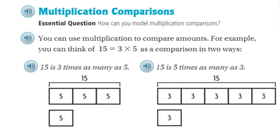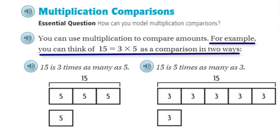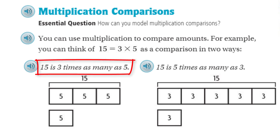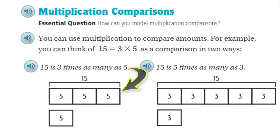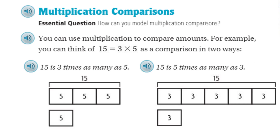You can use multiplication to compare amounts. For example, you can think of 15 is equal to 3 times 5 as a comparison in two ways. The first way: 15 is 3 times as many as 5. You can see that 15 is 3 times as much as 5 because 5 times 3 is 15. We also have that 15 is 5 times as many as 3 — because 3 times 5 is 15.